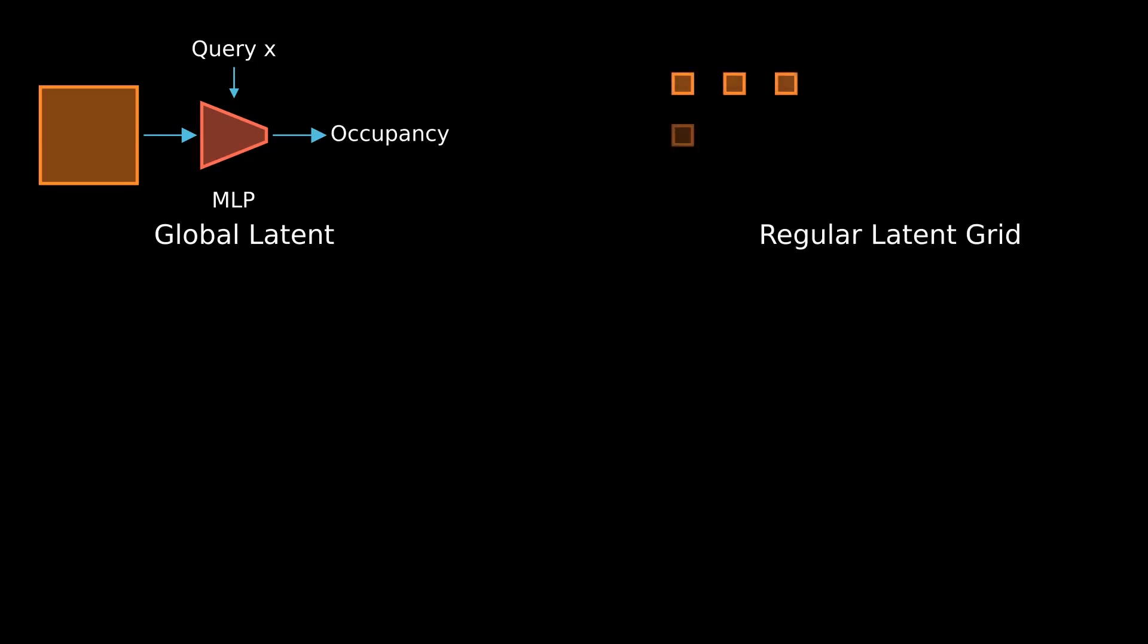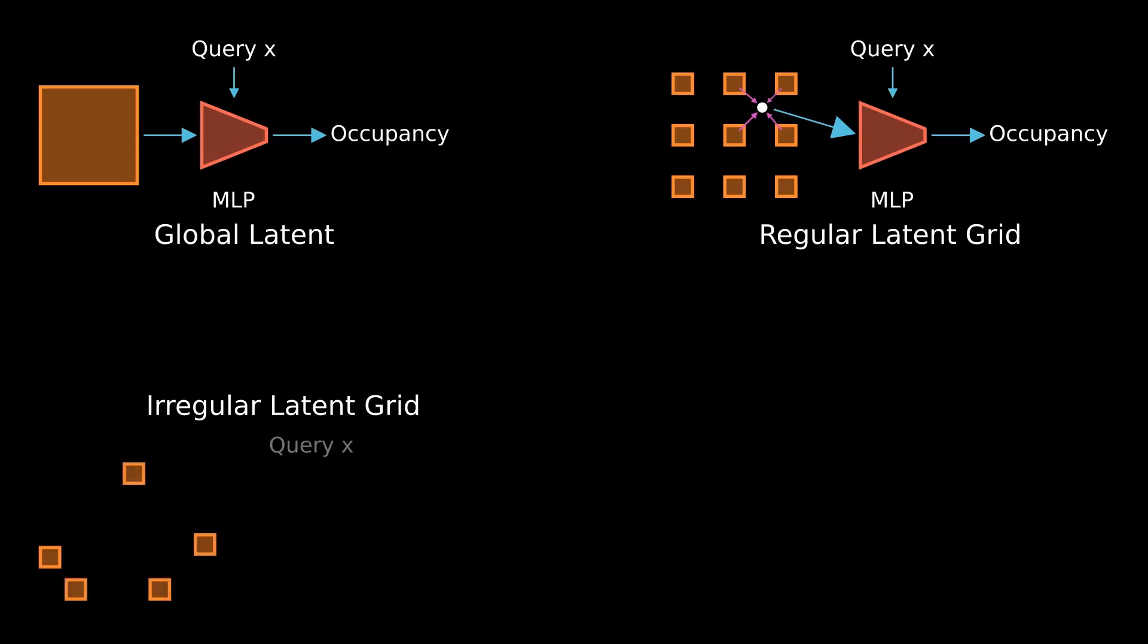Popular current methods define latents on a regular grid. However, the method does not scale well to larger grid sizes. Recently, irregular latent grid-based methods can achieve very high reconstruction accuracy.